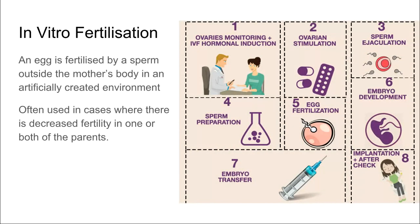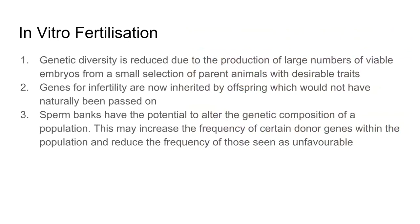IVF is a process used to fertilise an egg with sperm outside the mother's body in an artificially created environment. This is a process often used where there's decreased fertility in one or both of the parents. We have a flowchart here showing all of these processes before we transfer the embryo that has been created outside the body to the uterus of the female. This process does reduce genetic diversity due to the production of large numbers of viable embryos from a small selection of parents with desirable traits.